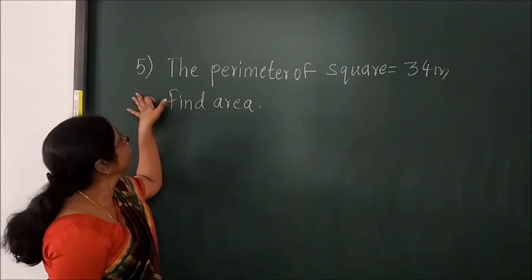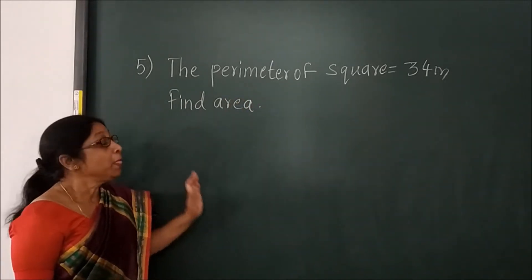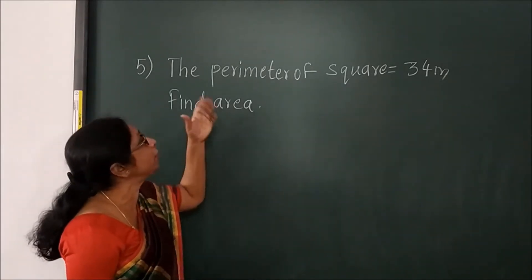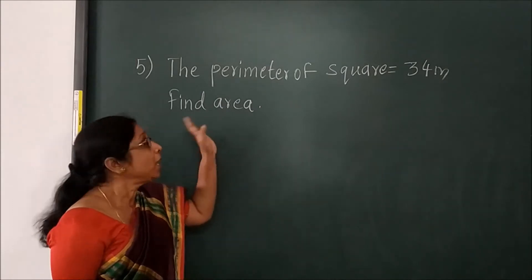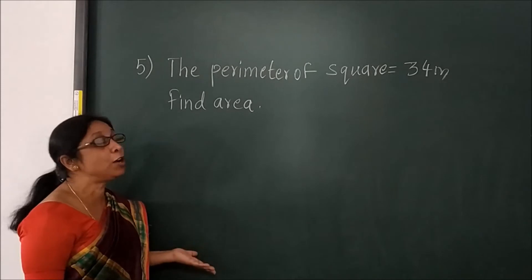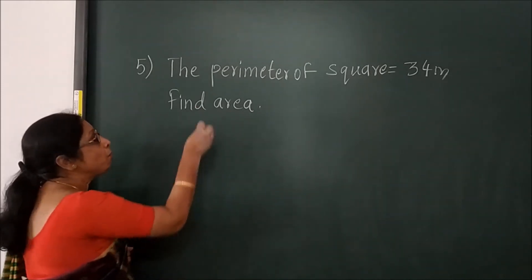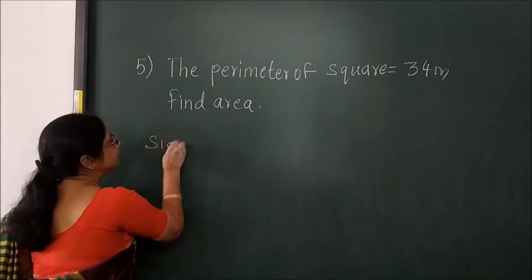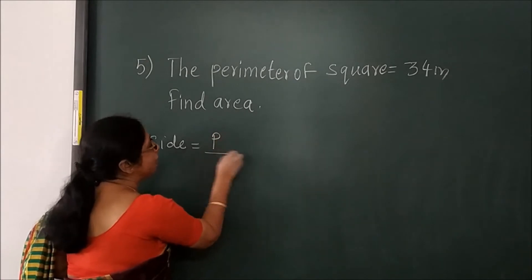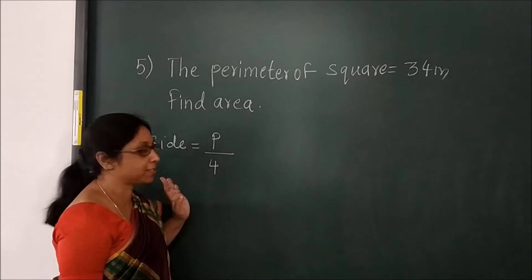Now in the 5th question, the perimeter of a square is given and you have to find the area. To find the area you have to use the formula for area of a square, which is side into side. But we don't have the side here. So to find the side first, you will use the formula: side equals perimeter upon 4. Why 4? Because a square has 4 sides.